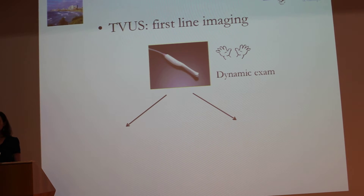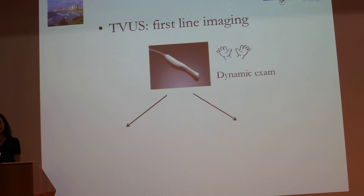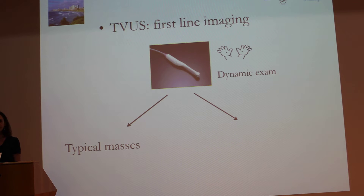First, ultrasound is the first step. It is a dynamic exam and it is important to use these dynamic characteristics to help characterize the nature of the mass. There are two main situations with ultrasound: the first one is the typical benign lesion, and the second — which is the problem and will require MRI — is the indeterminate adnexal mass.